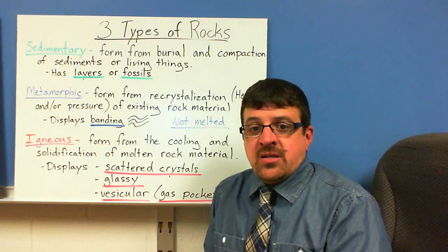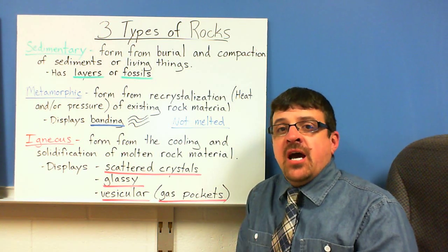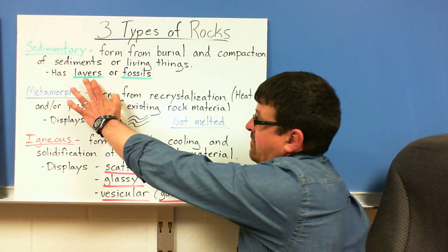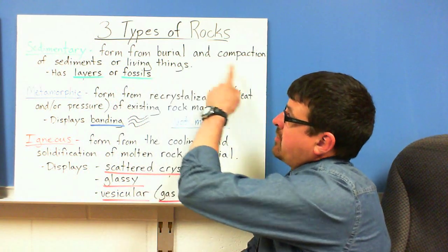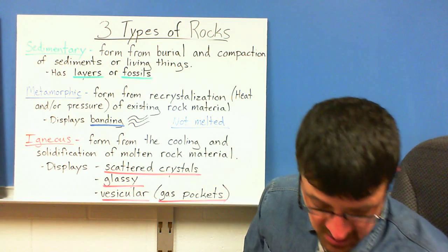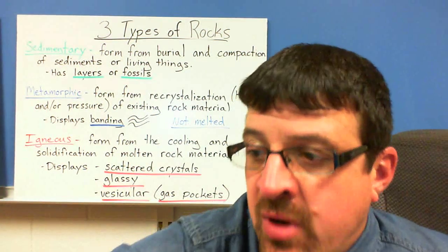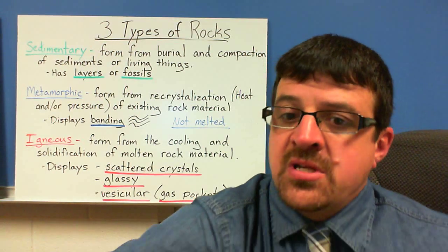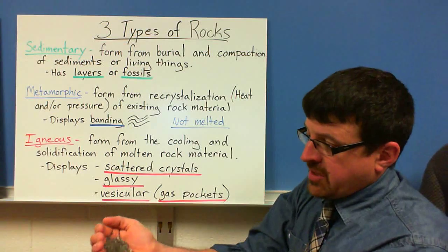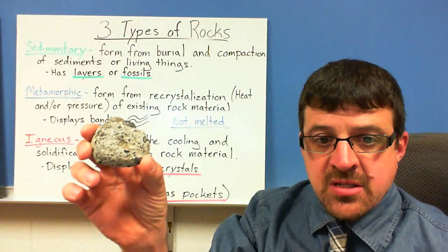Now, there are three types of rocks: sedimentary, metamorphic, and igneous. Sedimentary rocks have not been melted — they're pieces of other rocks. They have layers or fossils and form from the burial and compaction of sediments or living things. We take sediments, cement them together, and turn them into a rock — that's a sedimentary rock.